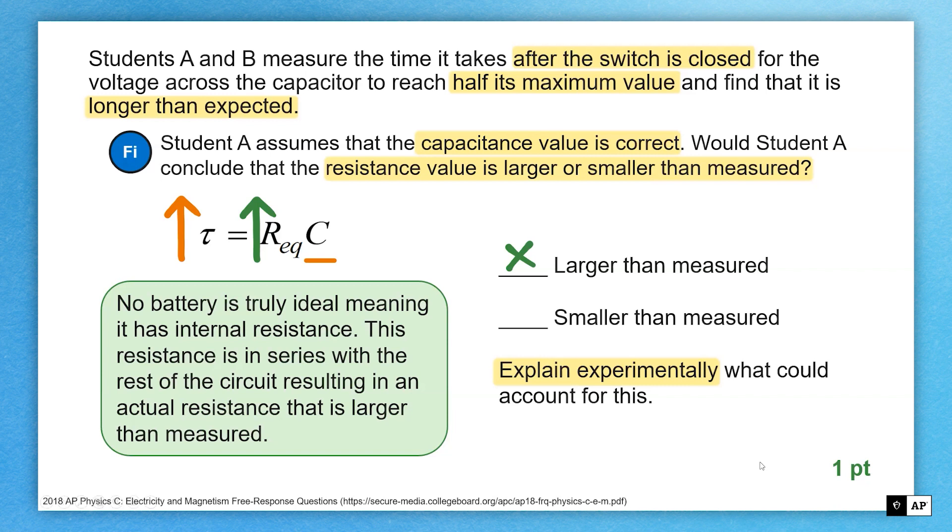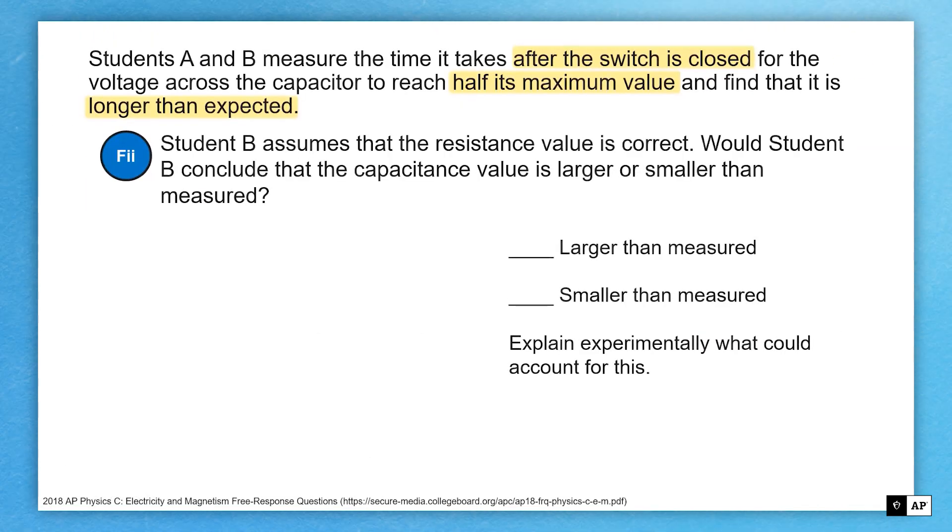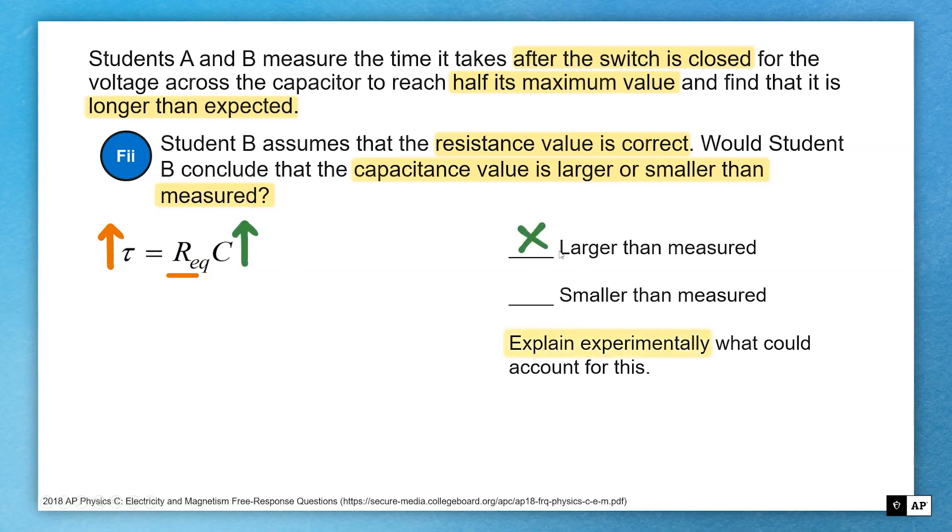Why? Because the next question is essentially the exact same thing, and they don't want to over-reward it. So here we have the resistance value being correct, and what capacitance value would that be larger or smaller if we assumed resistance was the same? Well, same thing like before, if my resistance is required to stay the same, if this increased, sure enough, my capacitance value must have been larger than it was actually measured.